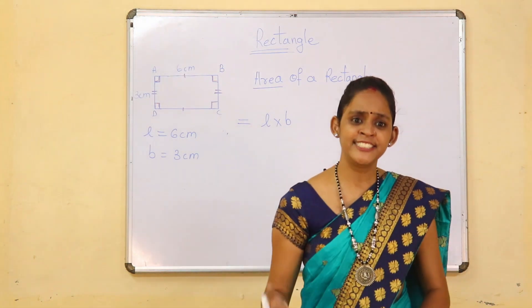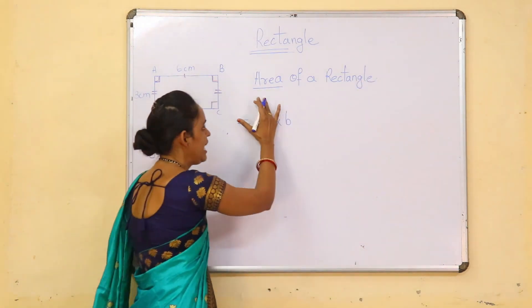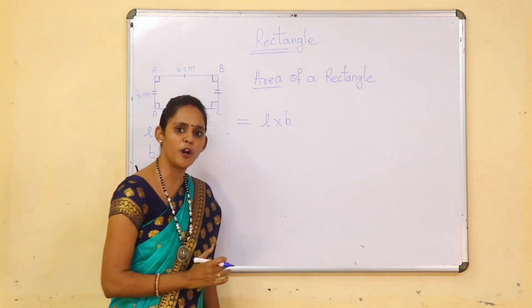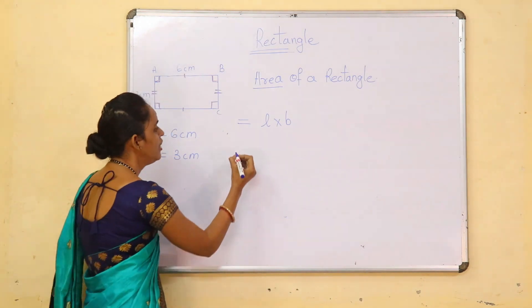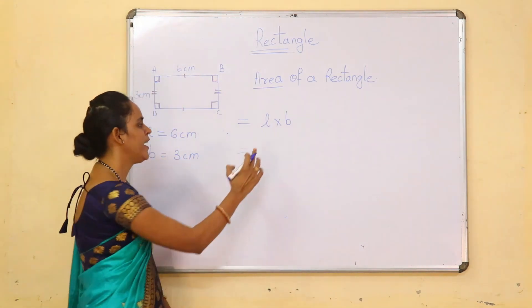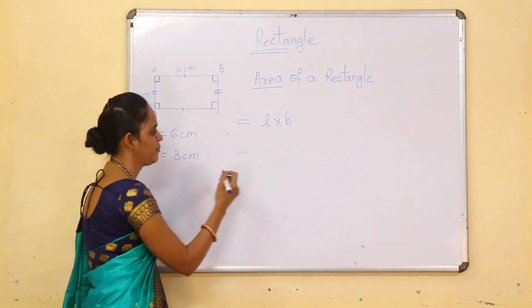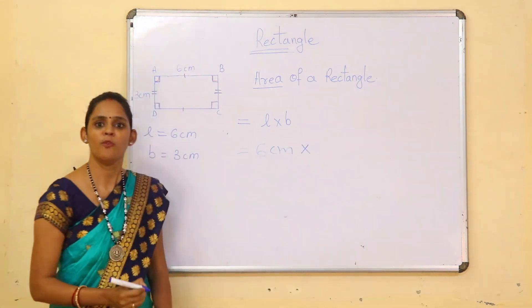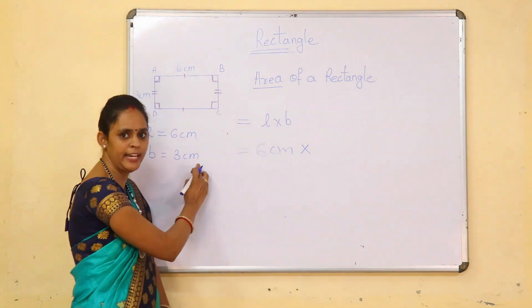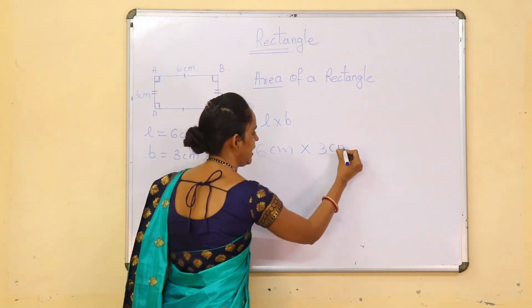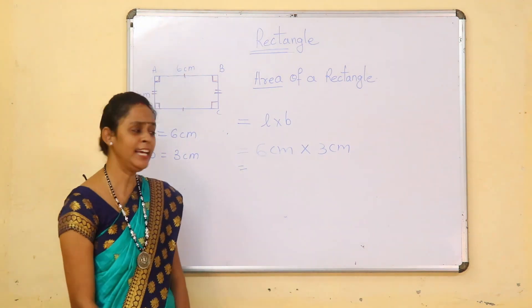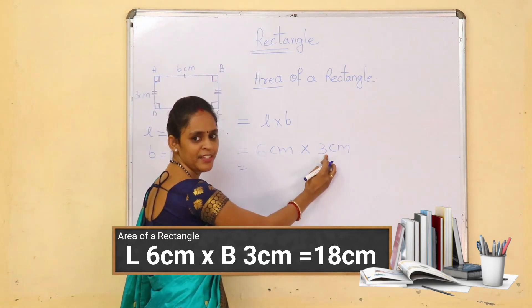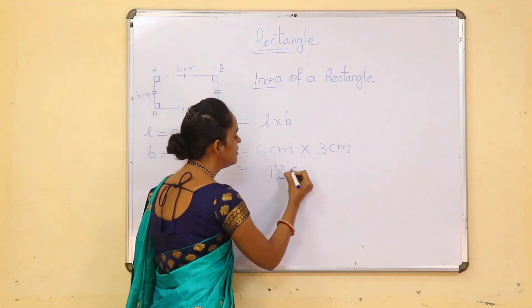Now let's see with the formula. Area of rectangle equals length into breadth. This is the formula for area of rectangle. We have to put in the values — what is the length of the rectangle? 6 cm. So we can write 6 cm into — what is the breadth of the rectangle? 3 cm. So we can write 3 cm. Now we have to multiply: 6 cm into 3 cm equals 18.